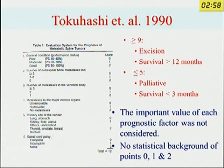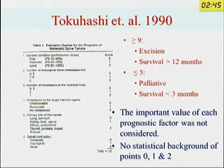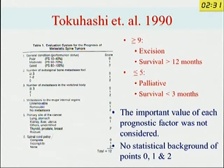Tokuhashi et al. gives certain scores to guide whether you need to go for excision or not, depending on the general condition of the patient, number of extra-spinal bone metastases, number of metastases in other vertebral bodies, primary site of cancer, and spinal cord palsy. However, there is no statistical background for these points, and now nobody is using this criteria.